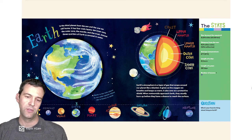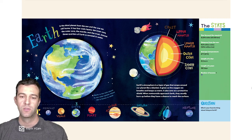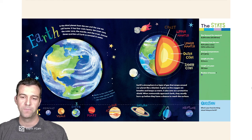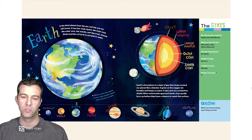Earth is the only planet in our solar system where life is known to exist. Earth's atmosphere is a layer of gas that wraps around our planet like a blanket. It gives us the oxygen we breathe and keeps us warm. It also acts as a protective shield. When meteoroids approach Earth, they usually burn up before they have a chance to reach the surface.